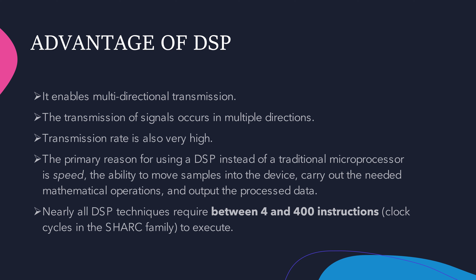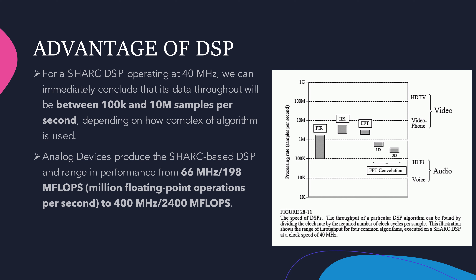Nearly all DSP signals require between 4 and 400 instructions to execute. For a SHARC DSP operating at 40 MHz, we can conclude that its data throughput will be between 100 kilosamples and 10 million samples per second, depending on how complex the algorithm is.